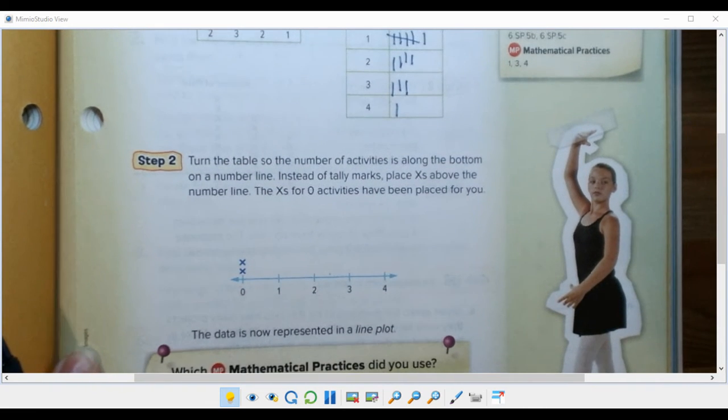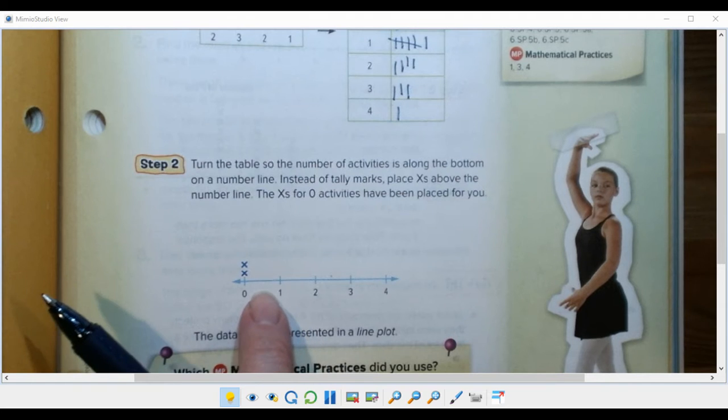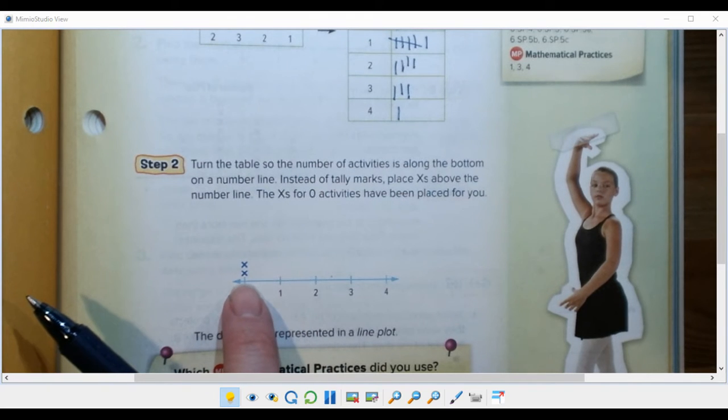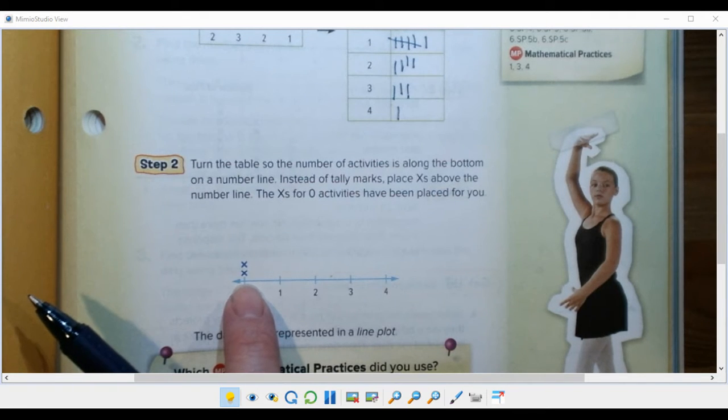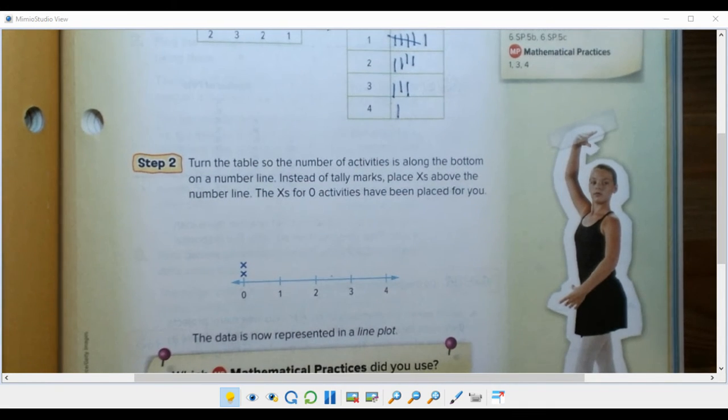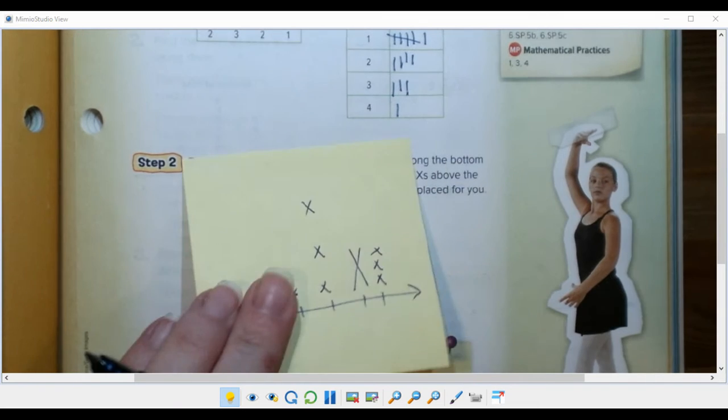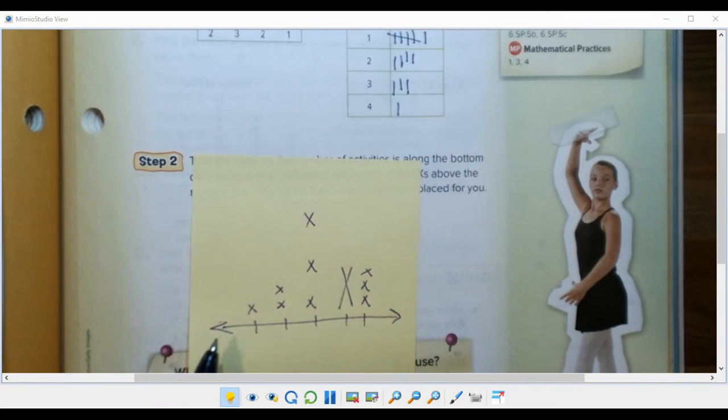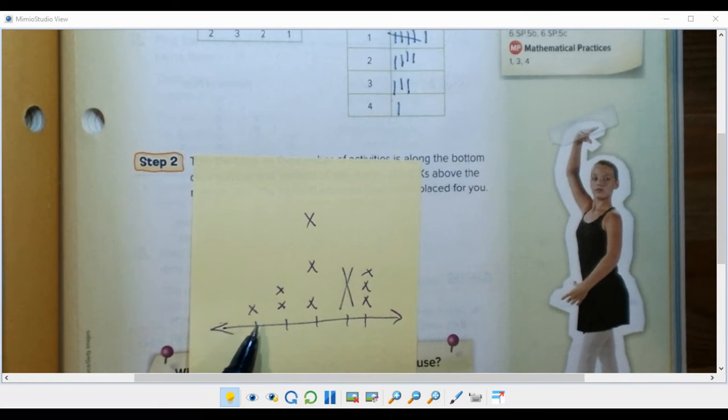So next we're going to go and put this into our line plot. Now a line plot uses x's, sometimes you'll see them done with dots. We actually saw an example of that the other day we were talking about mean and median and mode, that's called a dot plot. They're made exactly the same way and contain exactly the same type of information.